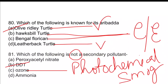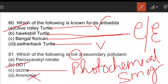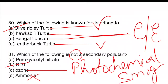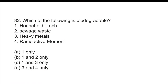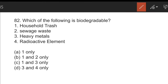The next question: which of the following is biodegradable? Biodegradable elements are those which can be degraded by microorganisms naturally. Sewage waste and household waste are correct answers. Heavy metals and radioactive elements are not biodegradable, which is why there are significant concerns about their storage and transportation.